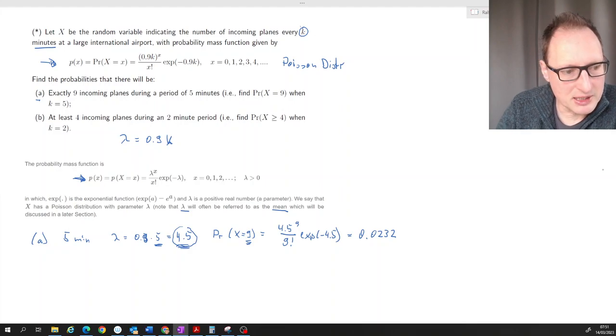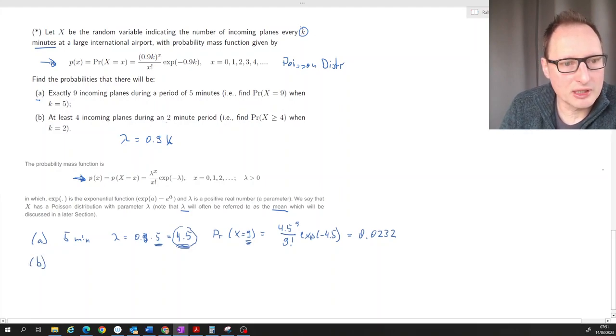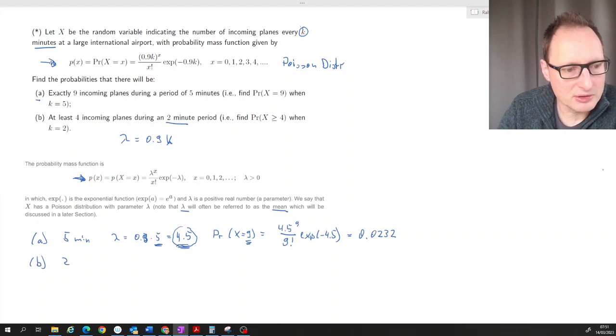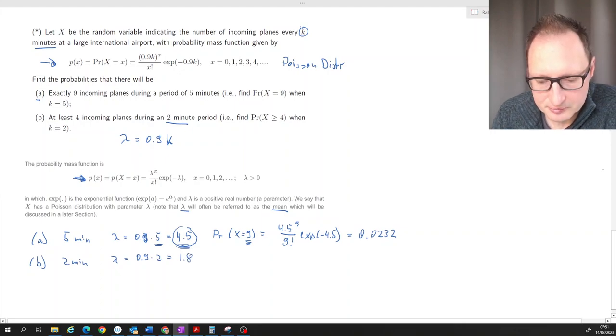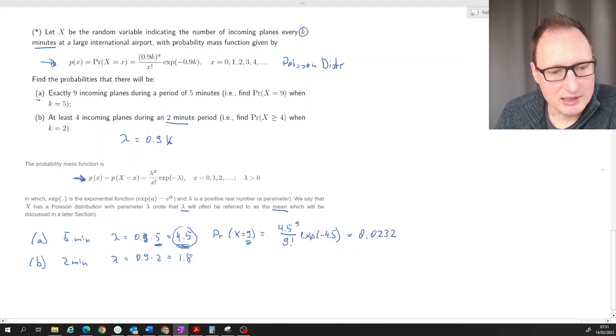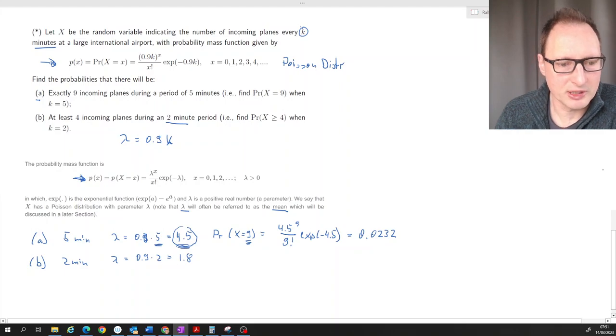So what about b? We are now looking at two minute periods, so two minutes. So what's our lambda? Our lambda is 0.9 times 2 which is 1.8. So that is what we will be using in the density function, 1.8 as our lambda. We should expect 1.8 planes every two minutes.